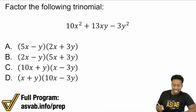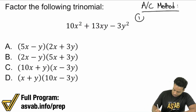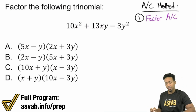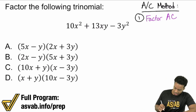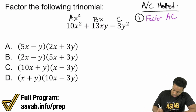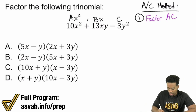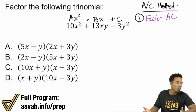Here's how the AC method works. Step one: factor AC. In standard form, a trinomial looks like Ax² + Bx + C, where A, B, and C are the coefficients of the first, second, and third terms. If you have another variable like y involved, it makes it slightly different but not exactly harder, and I'll show you right now.